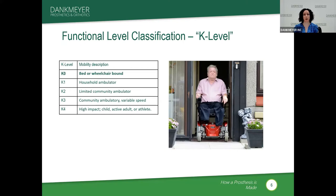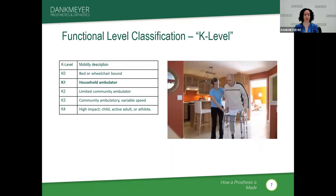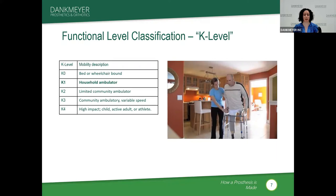Just because you start as a K-0 doesn't mean you're always going to be a K-0. It may be too early to be a true prosthetic candidate, and maybe with some physical therapy they'll be able to get to a point where they could be a K-1 ambulator. Our K-1s are household ambulators — ranging from using the prosthesis for transfers to doing ambulation around the home, usually with a walker or cane, with very little community ambulation.